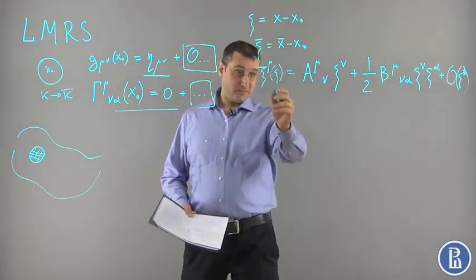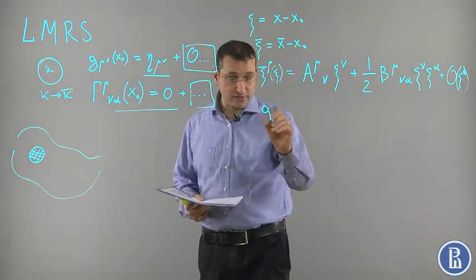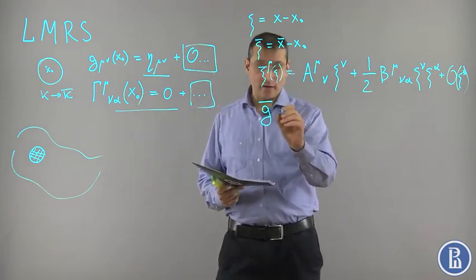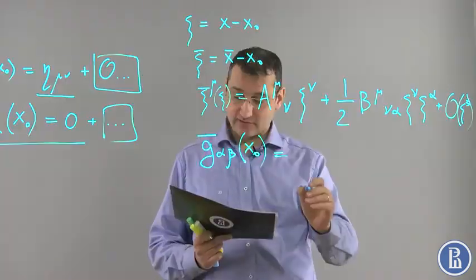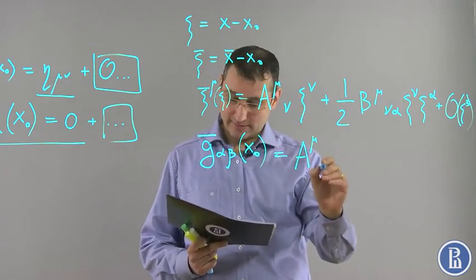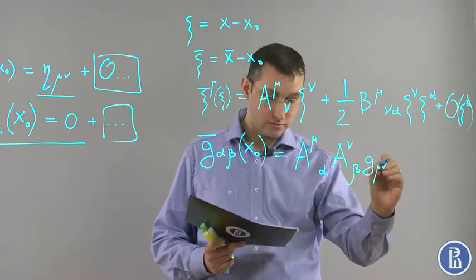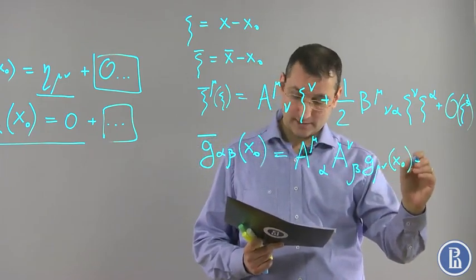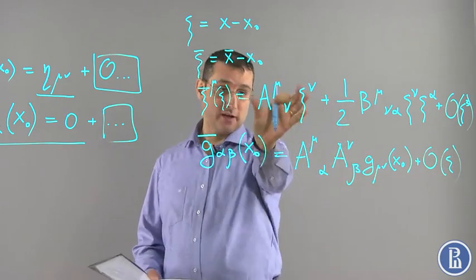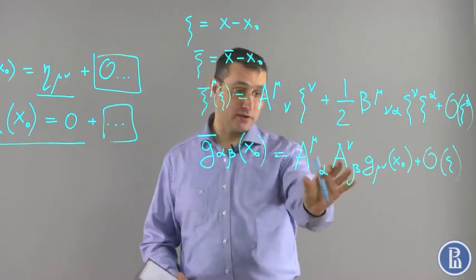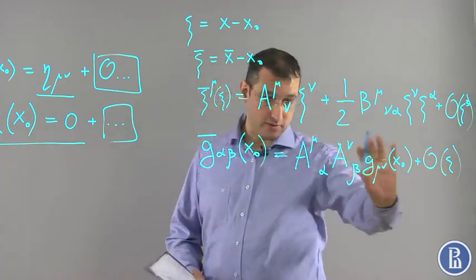Using the transformation rule for the metric, it is not hard to see that ḡ_αβ as a function of x0 transforms as follows: ḡ_αβ(x0) = A^μ_α A^ν_β g_μν(x0) + O(ξ). This just follows from the transformation rule of the metric when we keep only the leading term and neglect terms of higher order in ξ.